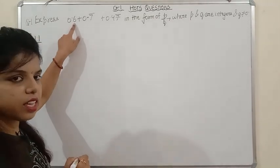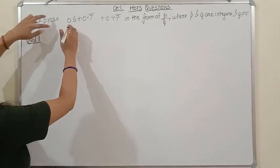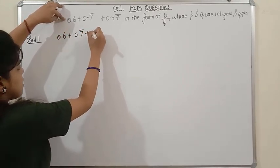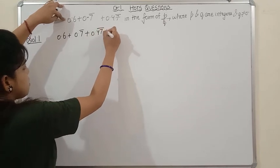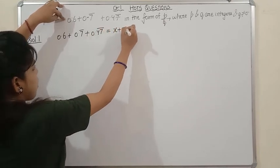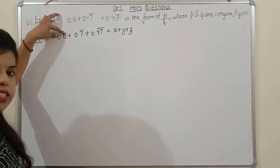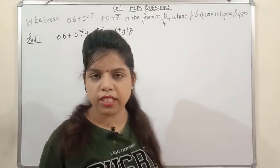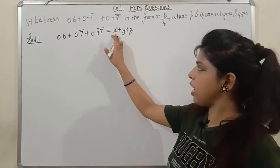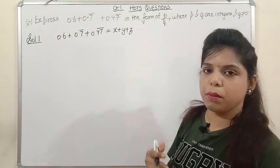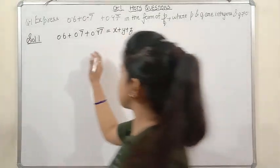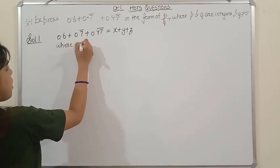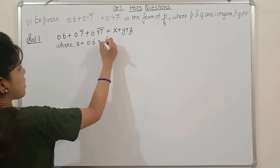Let 0.6 + 0.7̄ + 0.47̄ = x + y + z, where x = 0.6, y = 0.7̄, and z = 0.47̄. I have supposed these as x, y, z. Now I will solve the value of x, y, z in the form of p/q and then substitute the values.